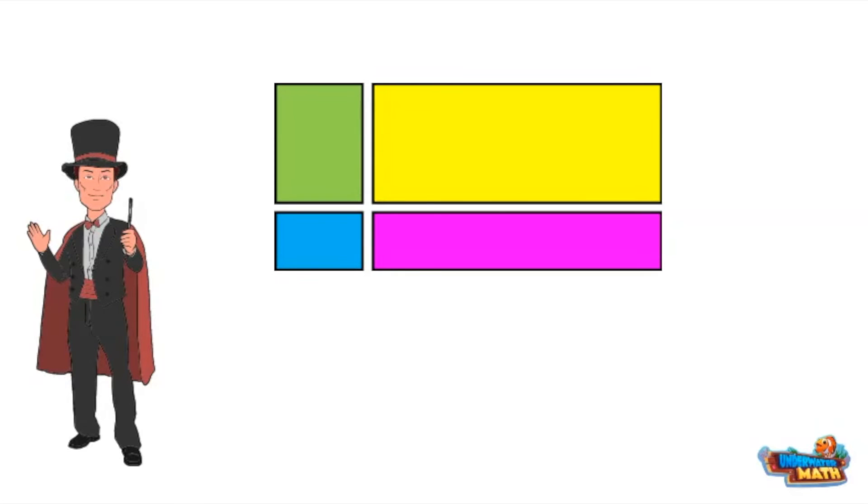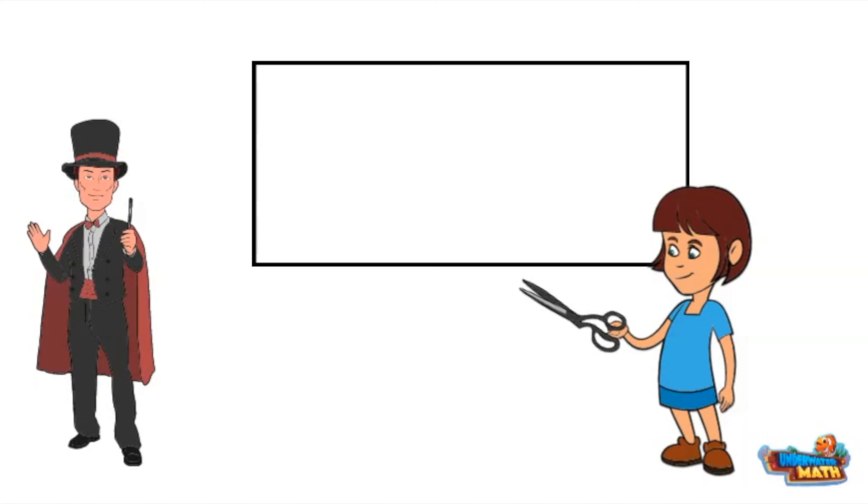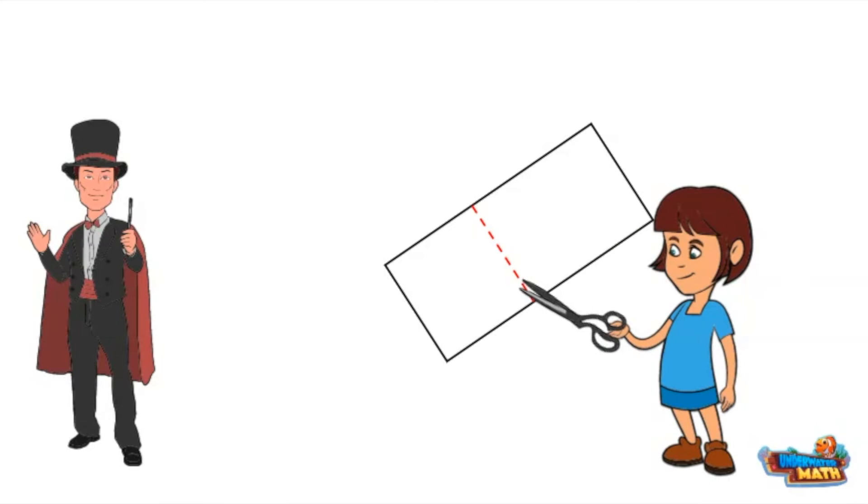For my final trick, I will need scissors and some supervision. Here is my assistant, Anne. Give her a hand. Anne will take the magical rectangular paper. I will tap it and say the words, and work your magic. It is time to start to break apart.